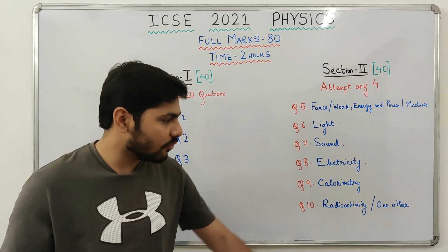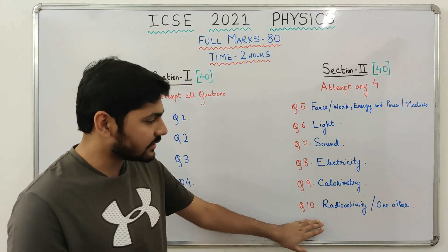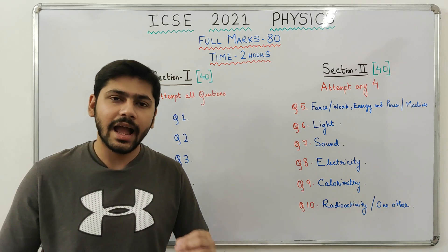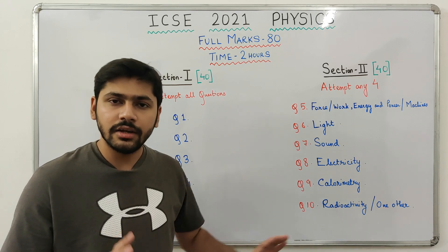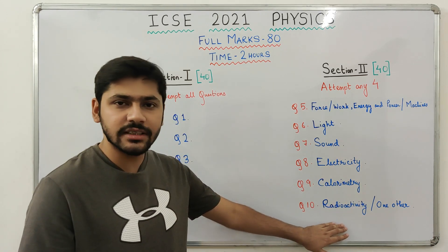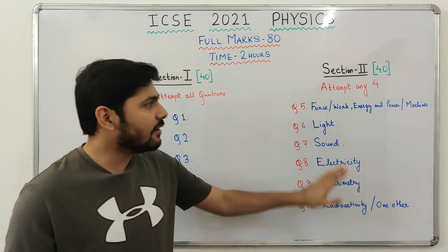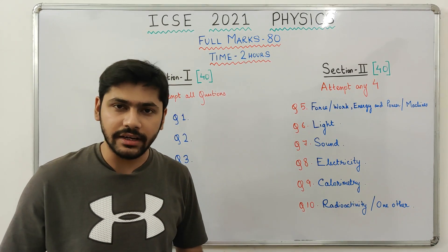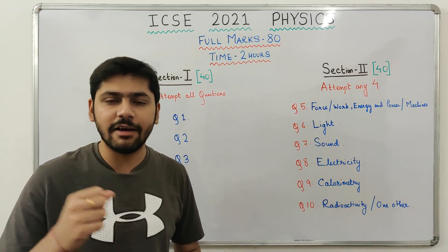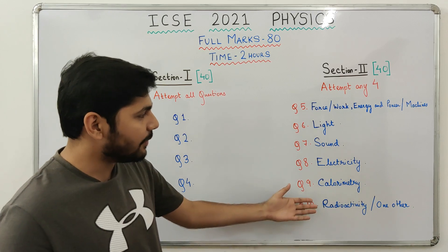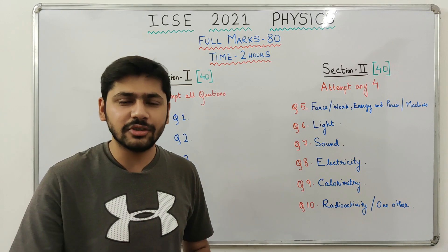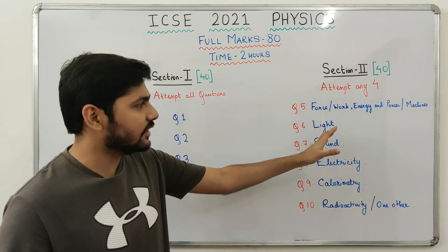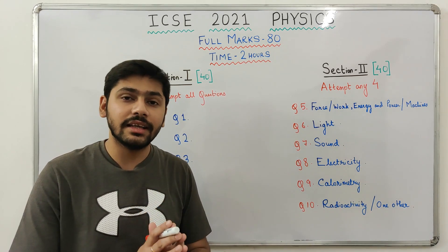Previously, question 10 was from radioactivity and electromagnetism. Since electromagnetism has been completely removed and a good portion of radioactivity has also been taken out, it is likely that question 10 will now include radioactivity and one other chapter. This is a general combination — nothing is concrete this year since many things have changed.